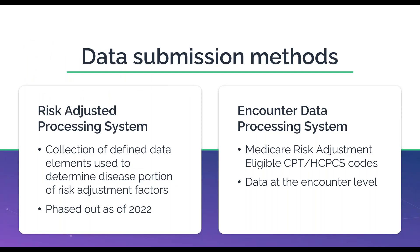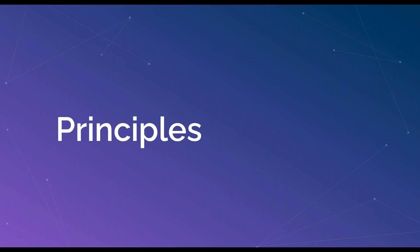The Risk Adjusting Processing System, or RAPS, defined reporting data elements centered around the dates of service and diagnosis codes, while the Encounter Data Processing System is more comprehensive and based upon typical fee-for-service billing data components. As of 2022, the model now calculates 100% of the risk-adjusting payments using the Encounter Data Processing System, so it is important to review the details of that system to ensure your data is not only accurately captured but appropriately reported.